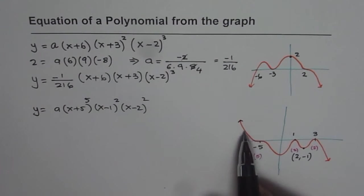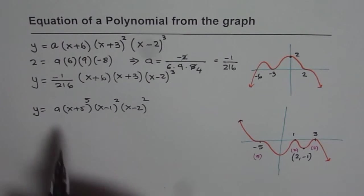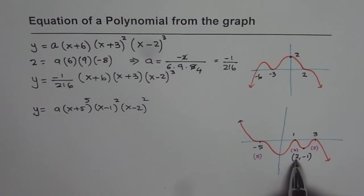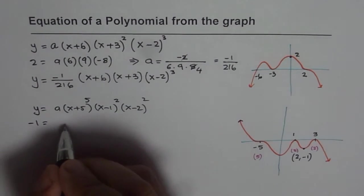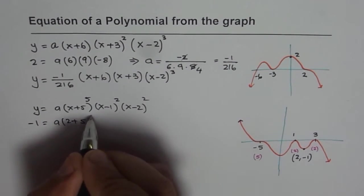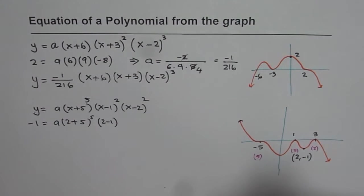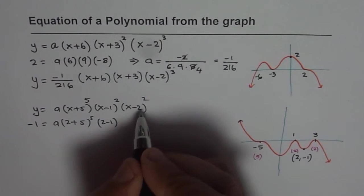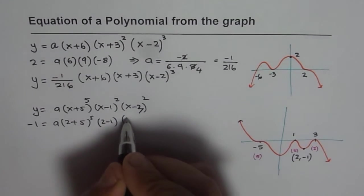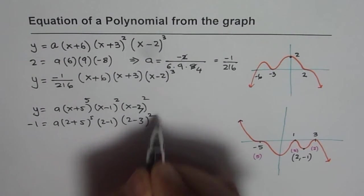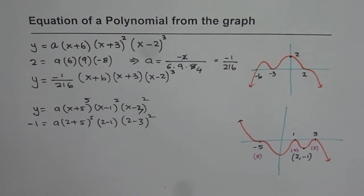To find the value of a, we'll plug in what is given to us. At 2, y is minus 1. So minus 1 equals to a, 2 plus 5 to the power of 5, 2 minus 1 and, sorry this was 3, this is 3. So it is 2 minus 3 whole square. So that is how we get our equation.